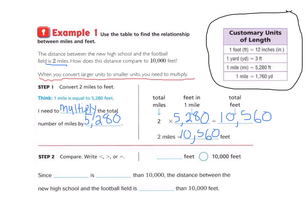Step 2, compare. Okay, so we're comparing these now. So our answer was 10,560 feet is greater than 10,000 feet. Since 10,560 is greater than 10,000, the distance between the new high school and the football field is longer than 10,000 feet.